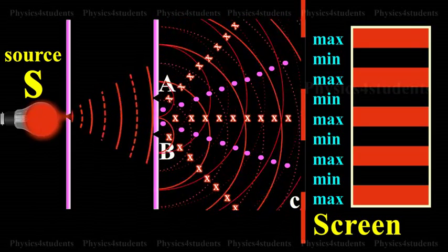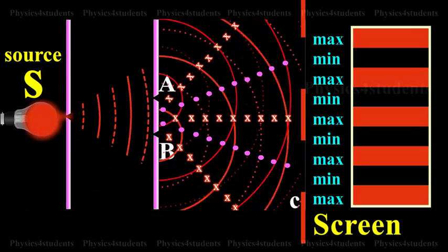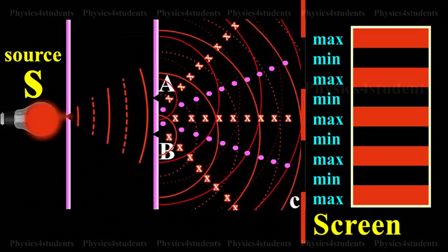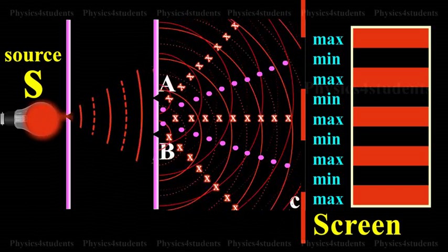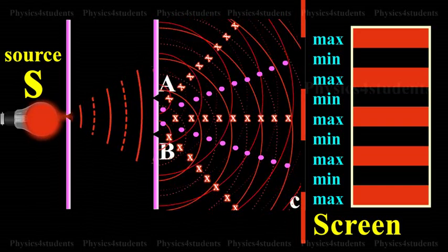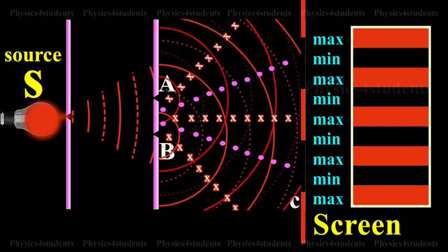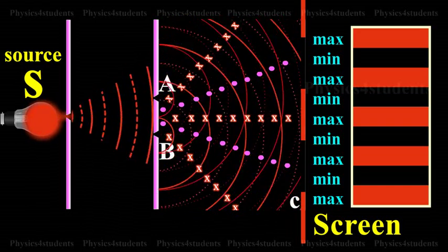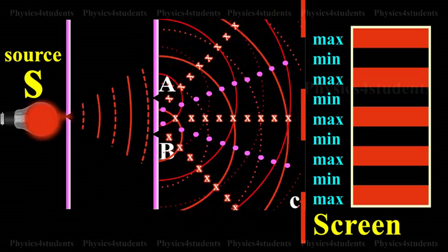At points where the crest of one wave meets the trough of the other wave, the waves are in opposite phase, the displacement is minimum and these points appear dark. These points are marked by circles. This type of interference is said to be destructive interference.